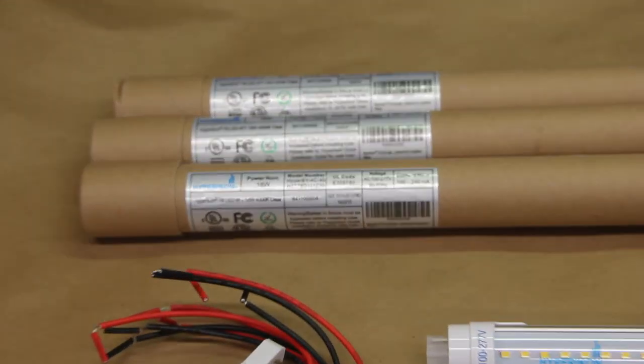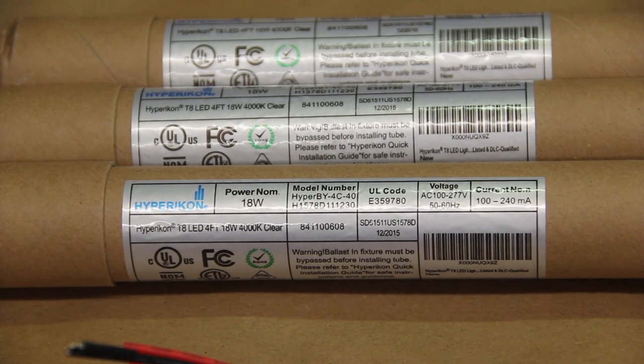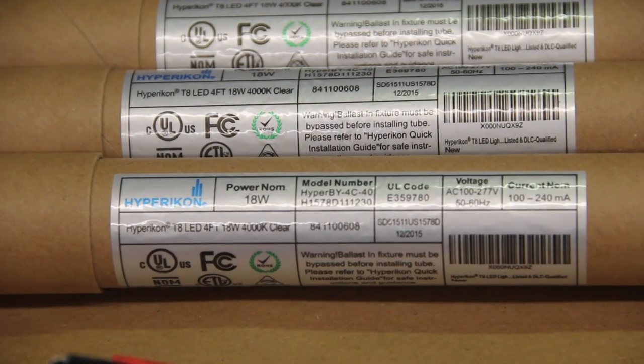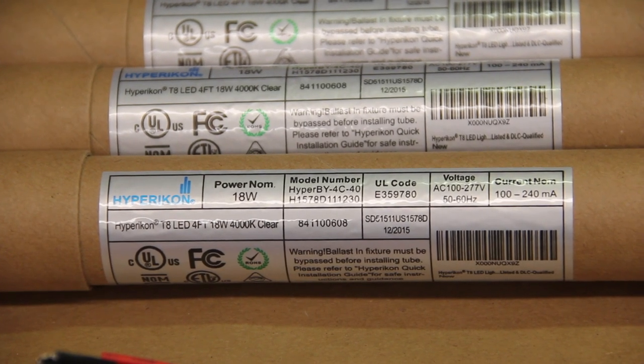These bulbs came as a set of four on Amazon. I've put the link in the description. The good thing about them is they also come with a set of tombstones that we will use on the powered ends. We will have to make a set for the non-powered ends.